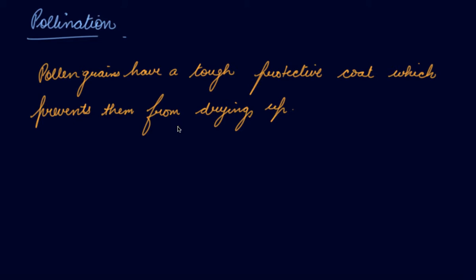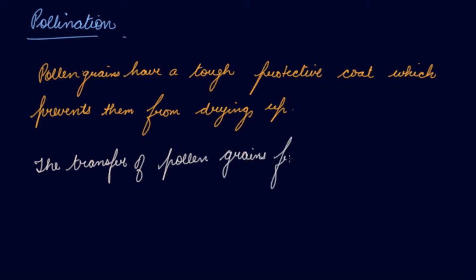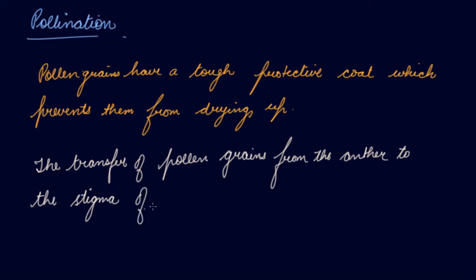Insects also visit the flower and carry away pollen on their bodies. Some of these pollen grains land on the stigma of a flower of the same kind. The transfer of pollen from the anther to the stigma of a flower is called pollination. The anther part is blown by the wind or taken by an insect and transferred to the stigma of another plant where the new flower grows.